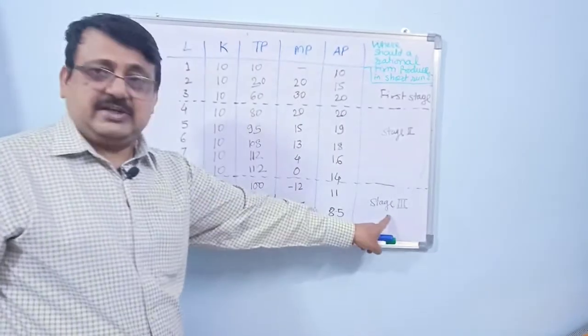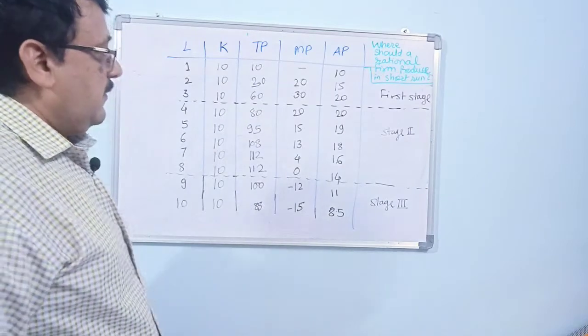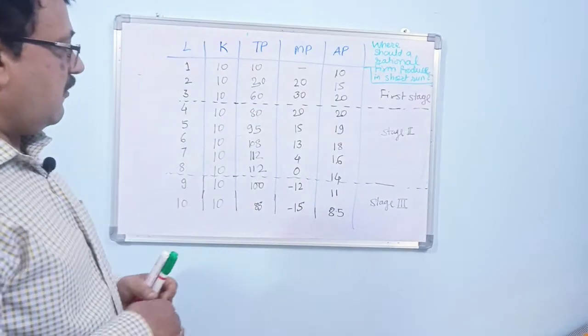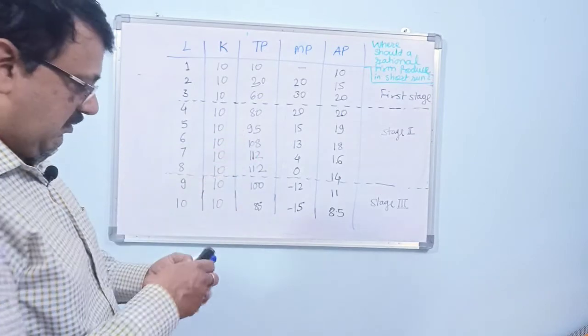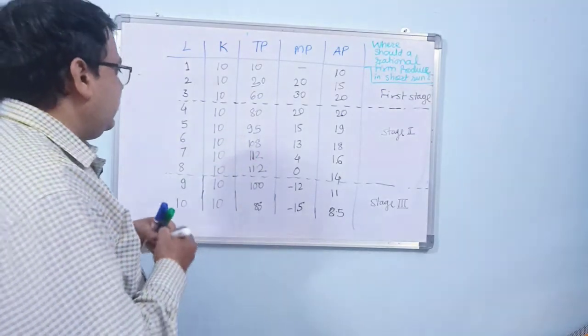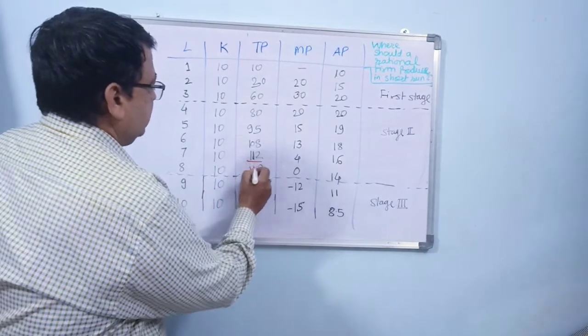Now a rational firm should obviously produce in the second stage where the production is maximum. You can see that production is maximum at this place and this place.